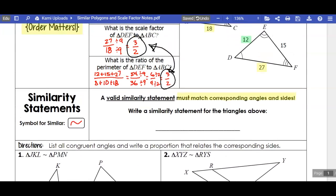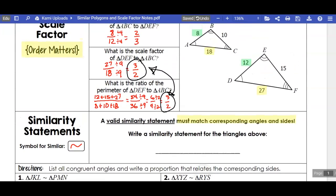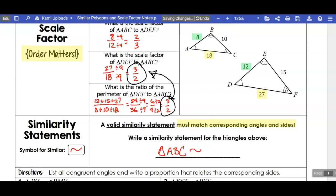Let's write a similarity statement for these two triangles over here. If I start with triangle ABC, is similar—okay, so I started with A, and then I went to B, and then I went to C.